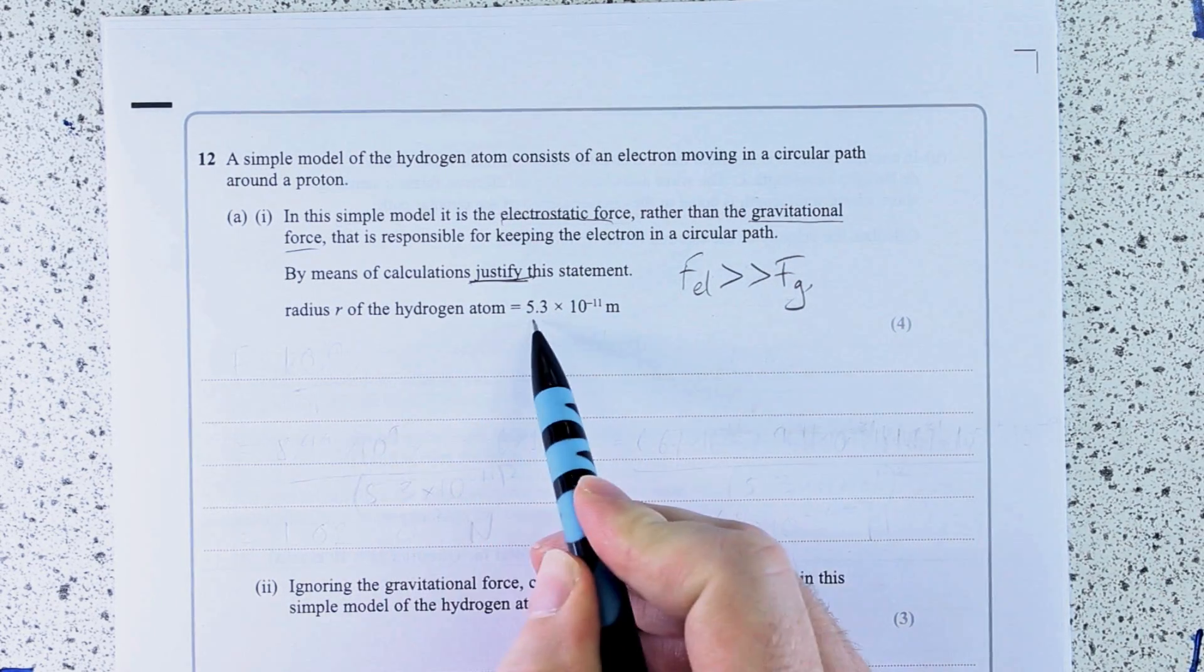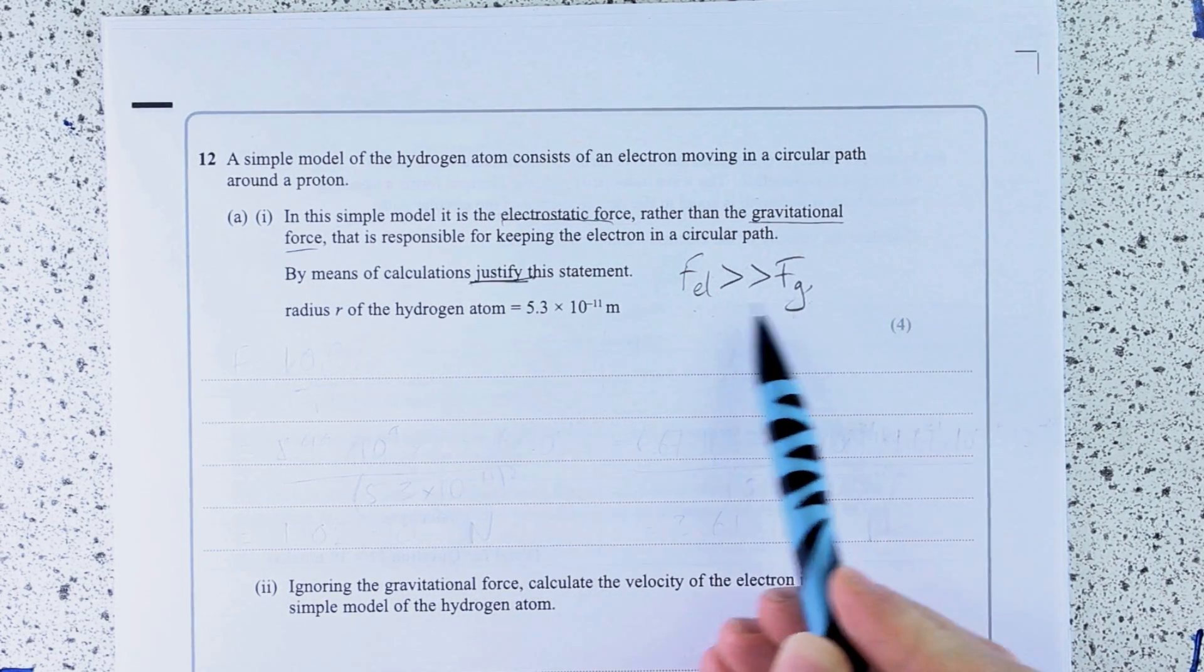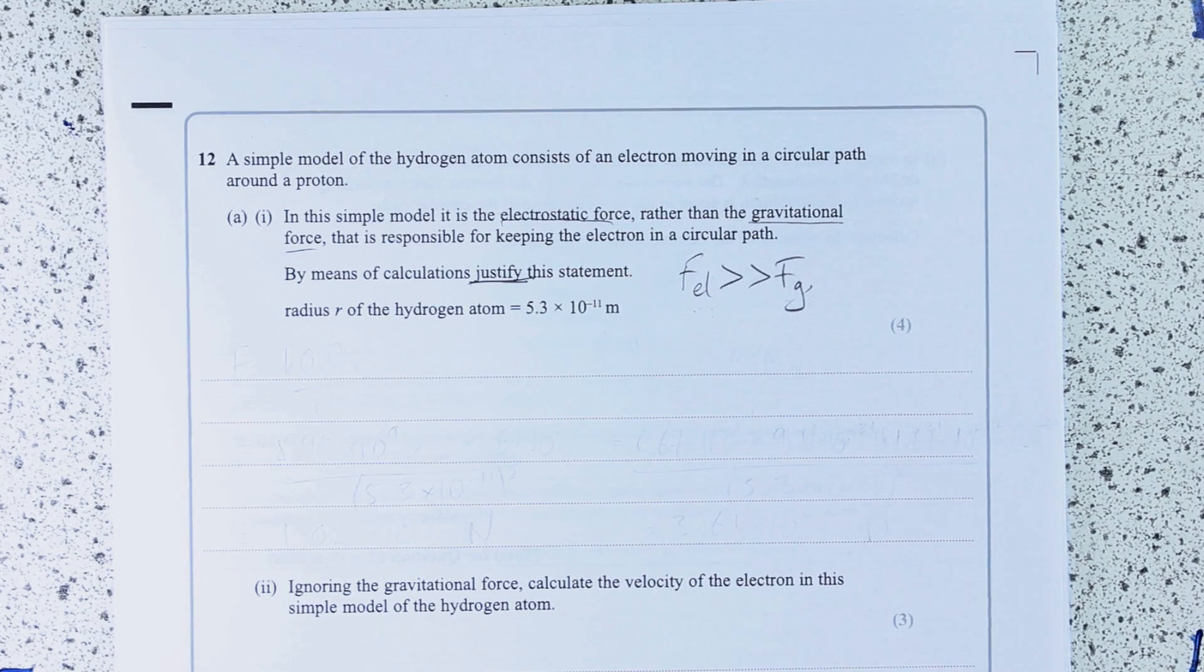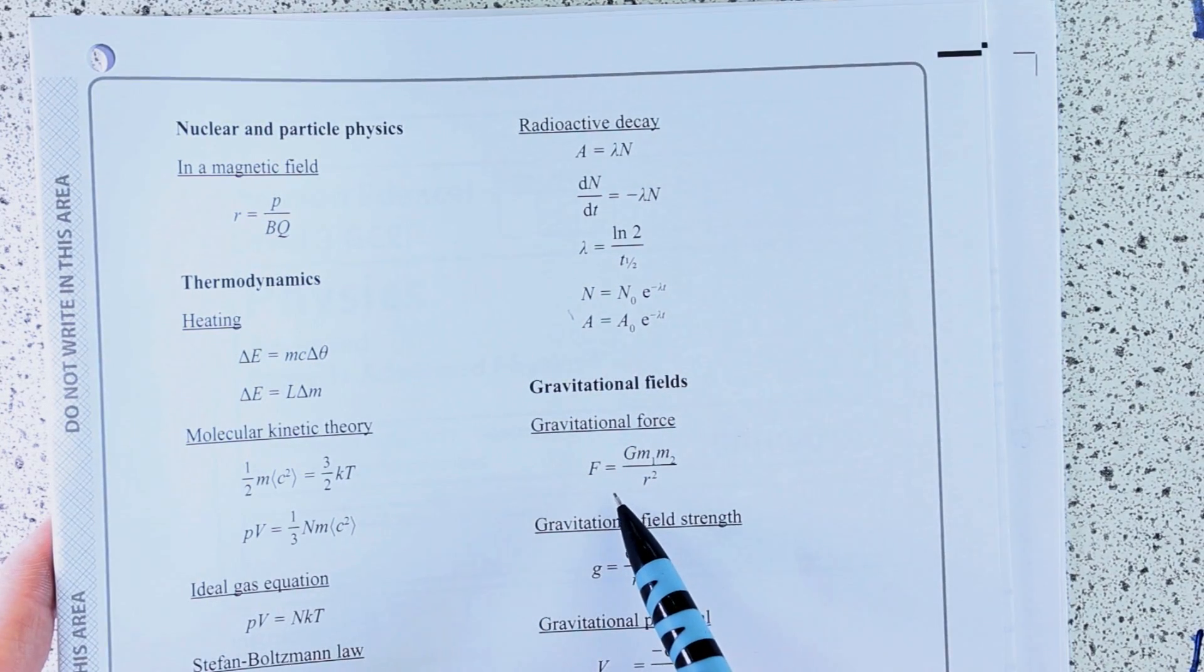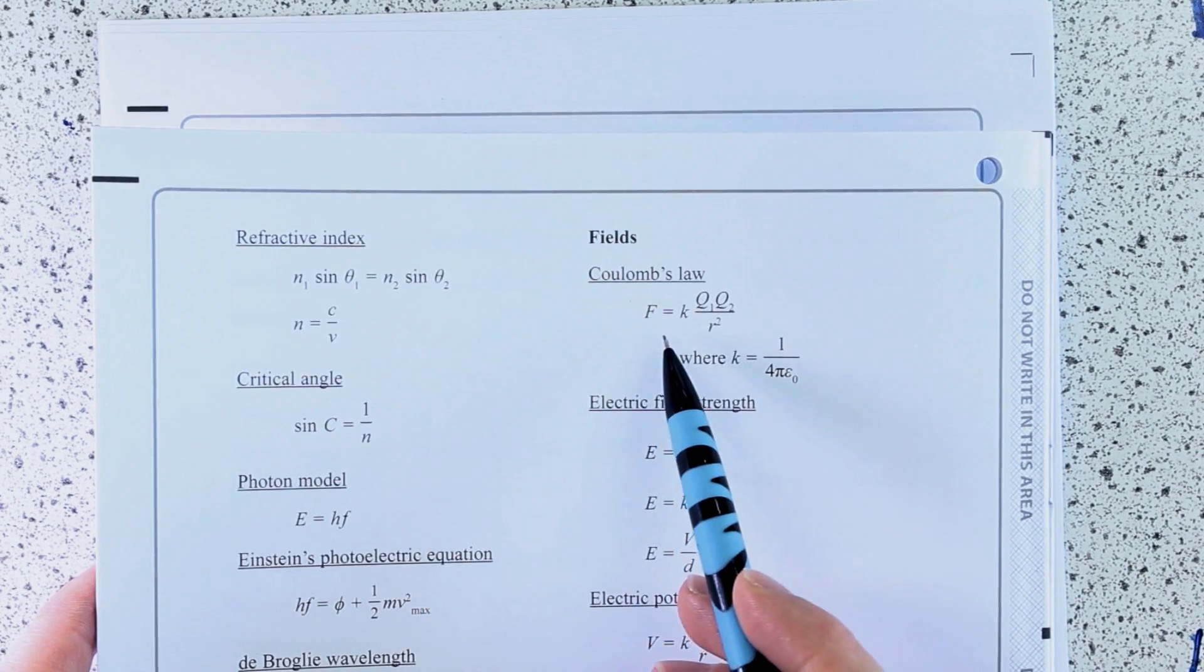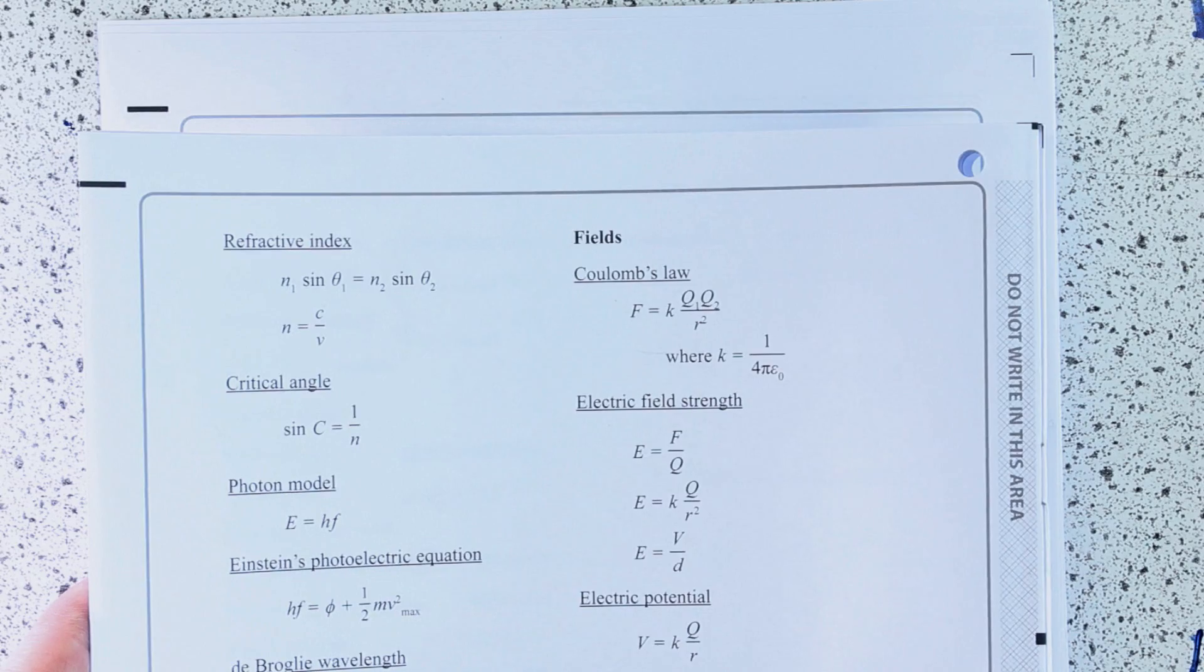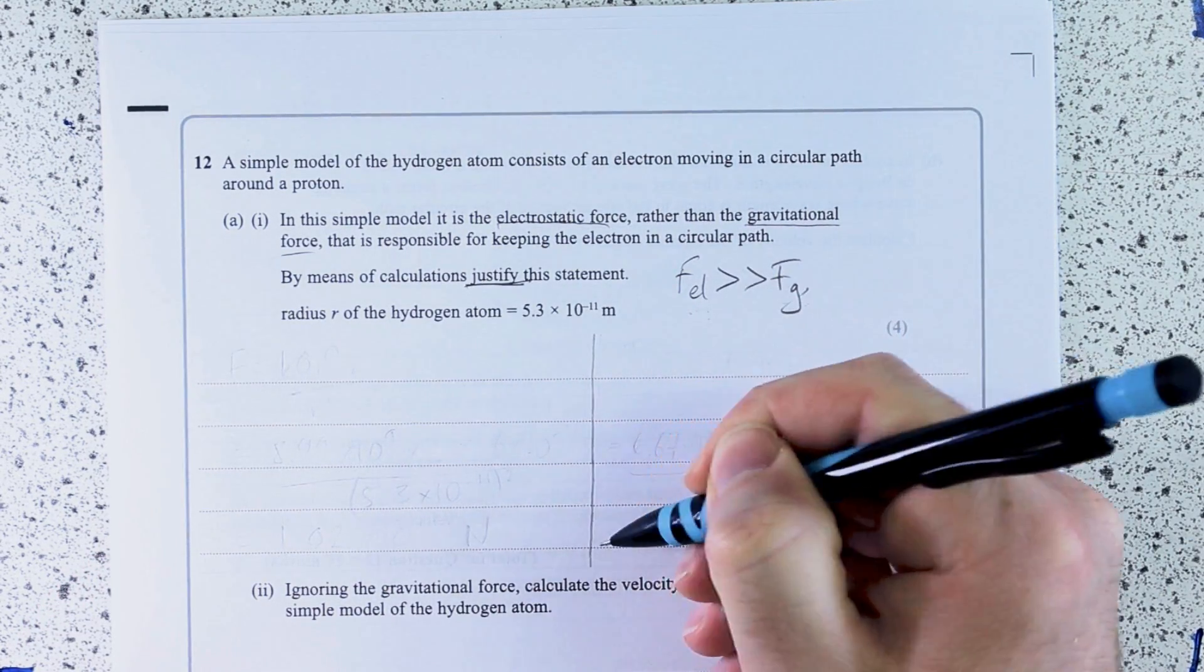You'll need this bit of data, the radius of the atom. I hope that you're familiar with two laws which govern these relationships from your study about fields: the gravitational force, that is Newton's law of universal gravitation, and Coulomb's law, the Coulomb force or force due to electrostatic charges. So essentially we just need to calculate those two to show that one is much, much larger than the other.